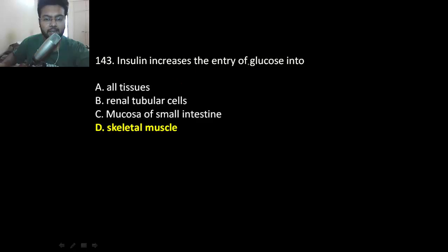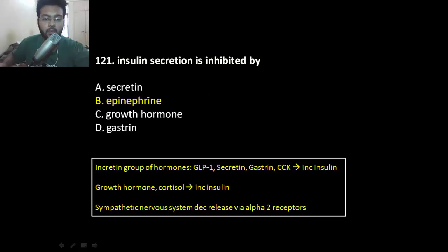Insulin increases the entry of glucose into skeletal muscle. Remember GI tract, renal tubular cell and brain does not require insulin for glucose utilization. Extremely important. GI tract, renal tubular cell and brain does not require insulin.